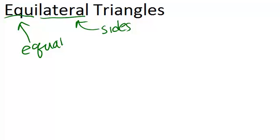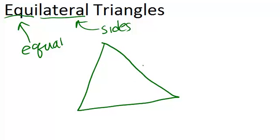So an equilateral triangle has all three sides equal, or all three sides the same length.